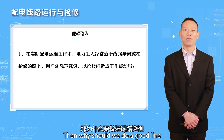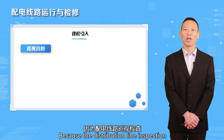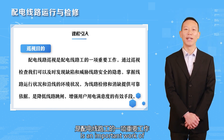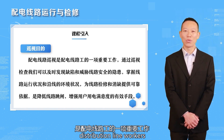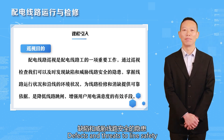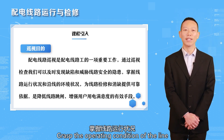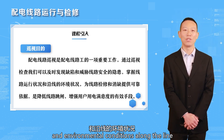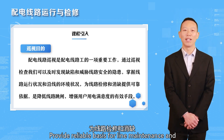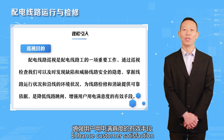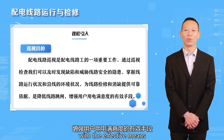Why should we do a good line inspection? Because distribution line inspection can prevent problems before they occur. It is an important work of distribution line workers. Through inspection, we can find out in time defects and threats to line safety, grasp the operating condition of the line and environmental conditions along the line, provide reliable basis for line maintenance, reduce line failures, and enhance customer satisfaction.